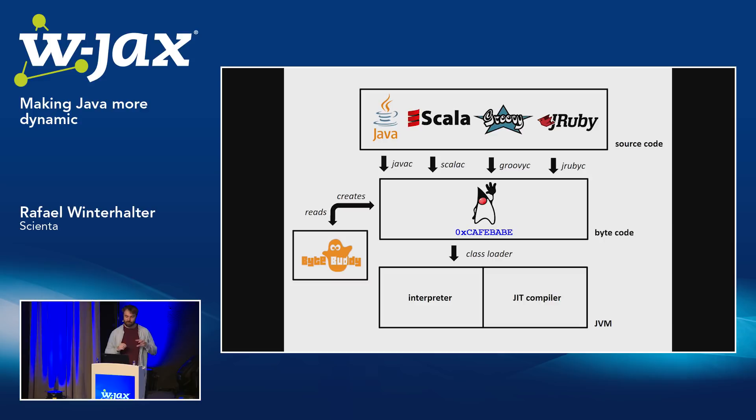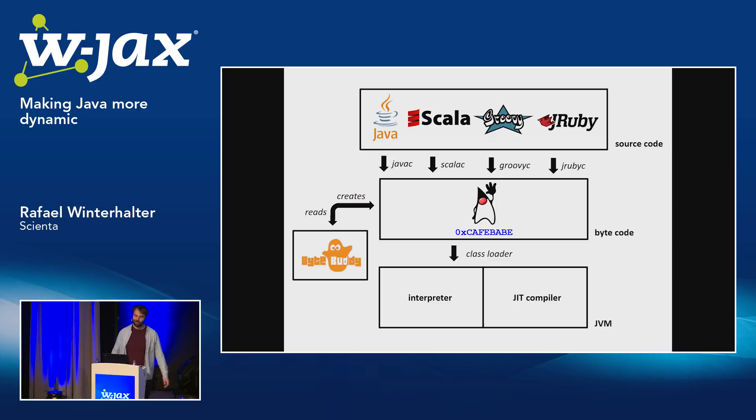A class file in the end is just a file, and the file is just a byte array. If you manipulate the bytes in a byte array, you get different outcomes. Since this byte format is so well defined and standardized for all platforms, it's a comparably easy task to do. It's not trivial — my library is a three-megabyte library — but it is trivial compared to real interaction with generic machine code, which is simply not possible.